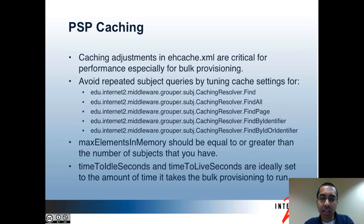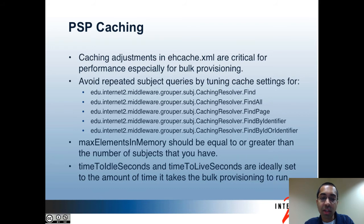That was a demo of some of the command line options with the PSP. Now I'll talk a bit about caching. If you're provisioning a lot of objects to the target, it's important to make sure that caching adjustments are made in the ehcache.xml file. The reason is to minimize the number of times an individual subject is looked up in your subject source. For instance, if you have 100,000 subjects and each subject is in 10 groups and the maximum size of your subject cache is 5,000, then each subject will likely get queried multiple times because the cache size is too small. You should set the max elements in memory to be equal to or greater than the number of subjects you have.